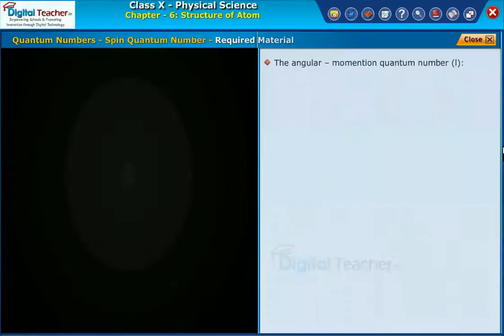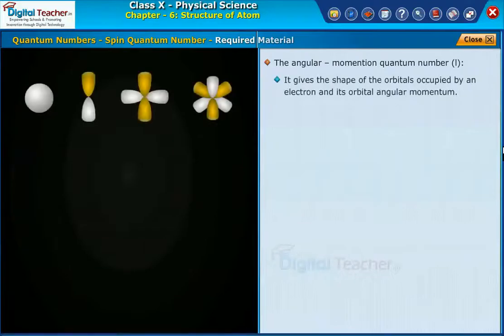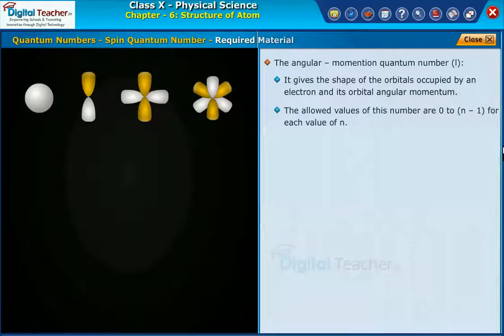The angular momentum quantum number. It gives the shape of the orbitals occupied by an electron and its orbital angular momentum. The allowed values of this number are 0 to n-1 for each value of n. Each l value represents one sub-shell.